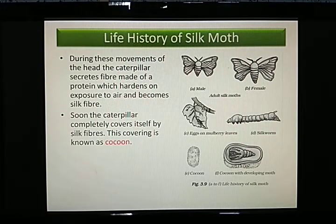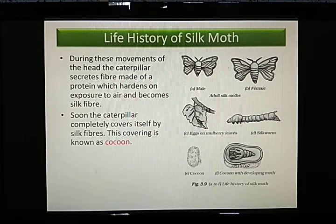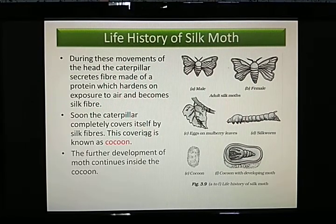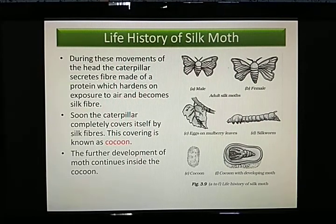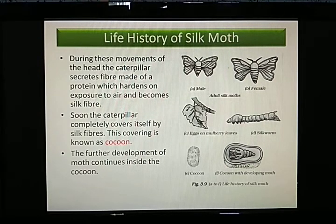Once the caterpillar completes covering itself with silk fiber, this covering is called a cocoon. You can see it is fully covered. Inside the cocoon, the further development of the moth continues over a period of time, until it develops into an adult silk moth. This cocoon acts as a shield for the silkworm, just like a baby develops inside the womb of a mother.